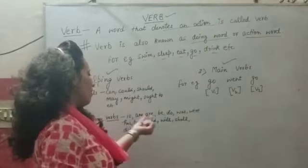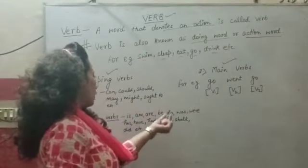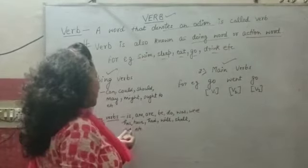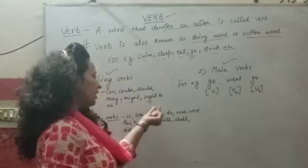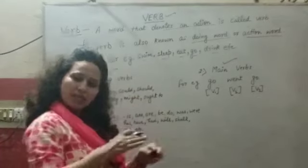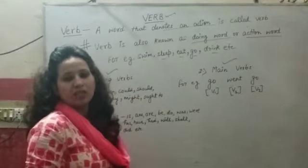The auxiliary verbs also include: have, had, will, shall, did, be, do. These are all your auxiliary verbs.